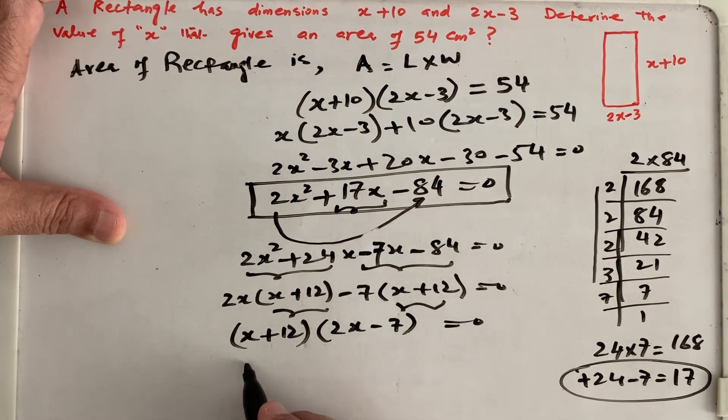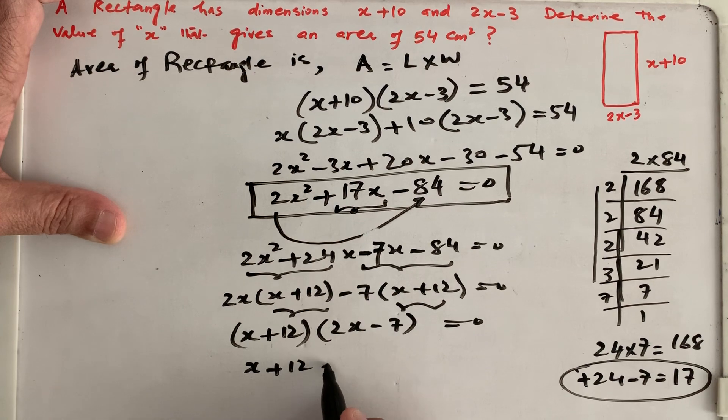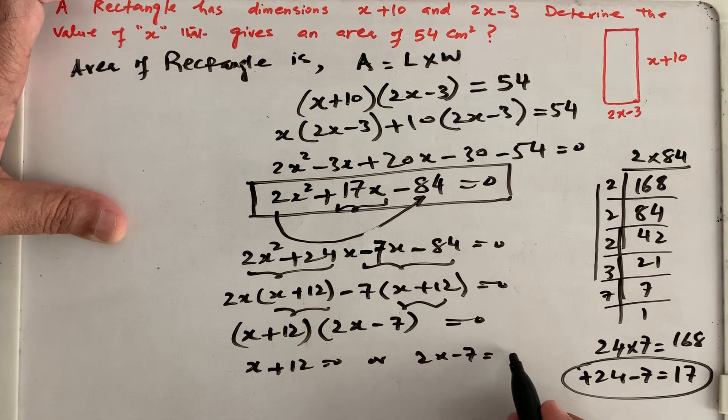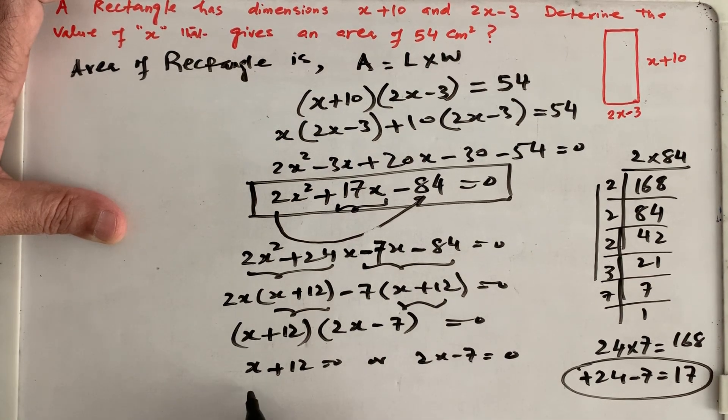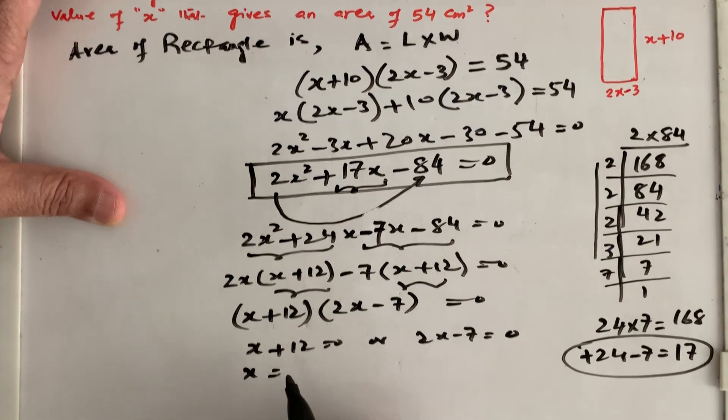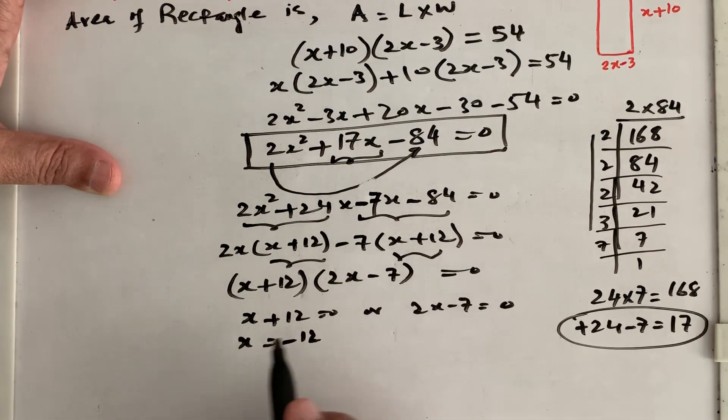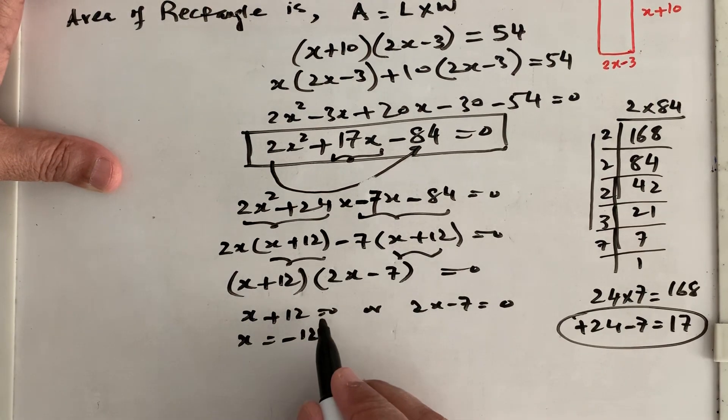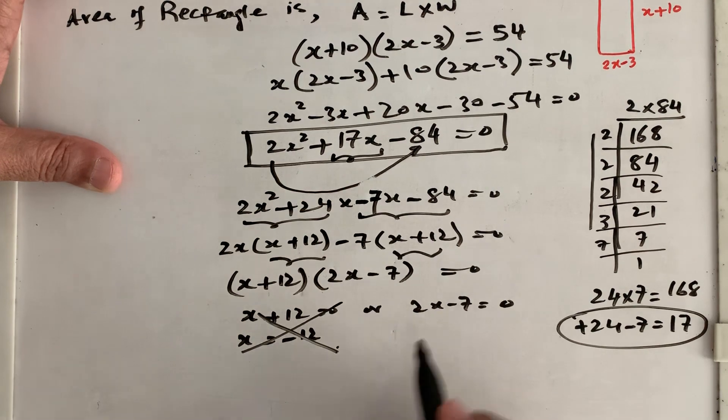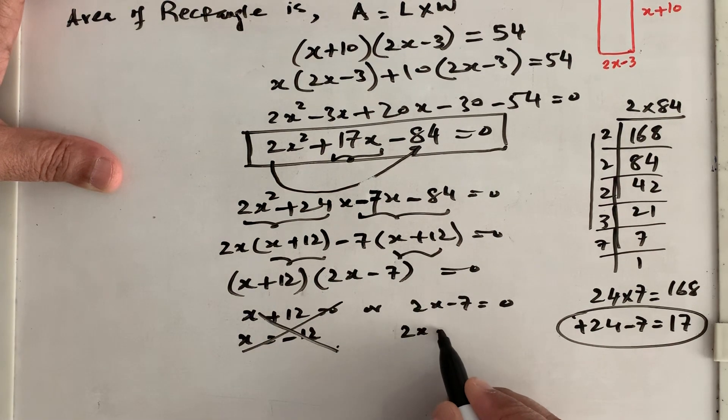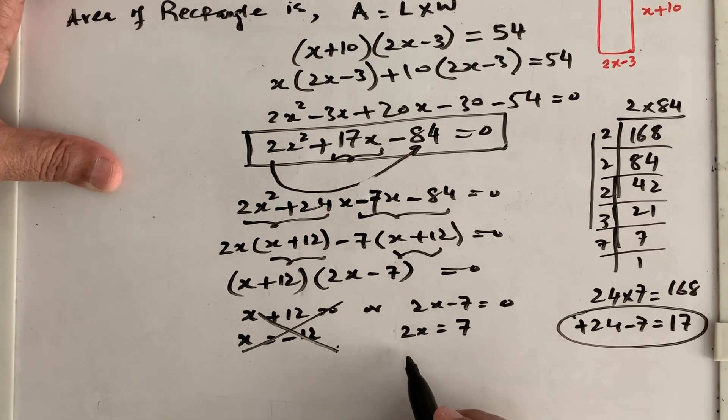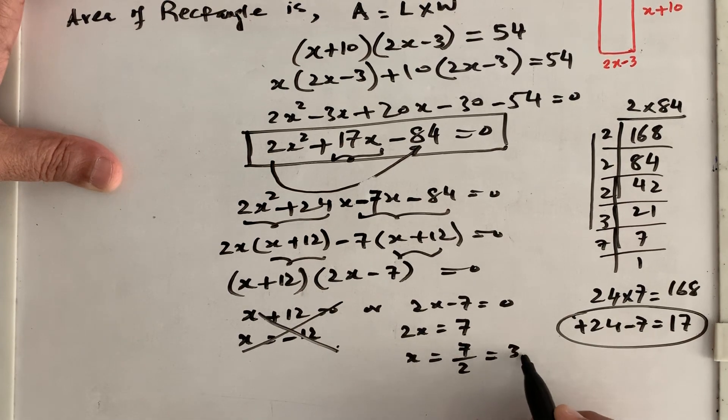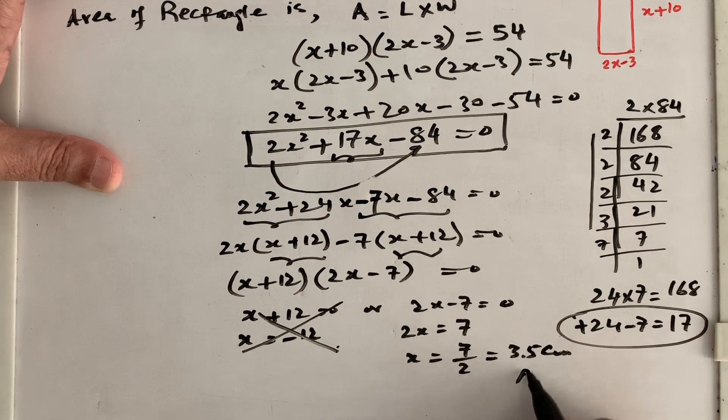So now we have two factors. x plus 12 equals to 0, or 2x minus 7 equals to 0. Here, this will give us a negative value, so we will neglect this answer, because x cannot be negative. In this case, we have to measure the area or the dimensions, so we will cancel this one. And we will take this answer: 2x minus 7 equals to 0 means 2x equals 7, and then x equals 7 divided by 2, which equals 3.5 centimeter. So this is our answer.